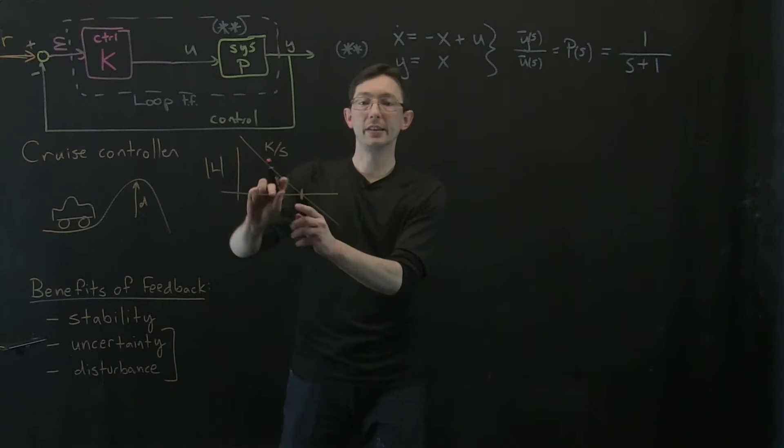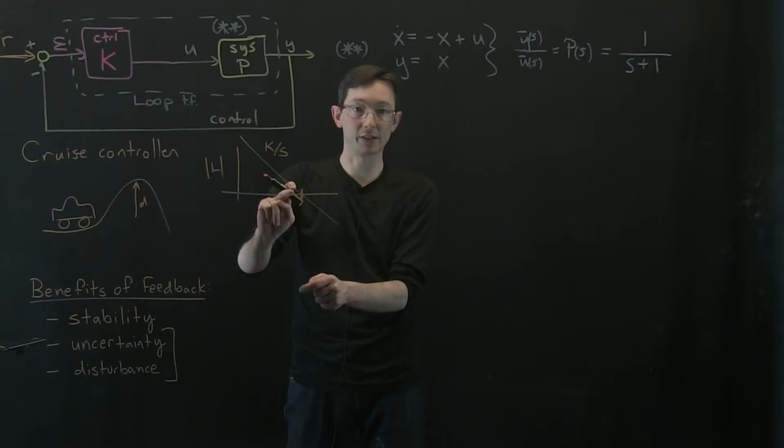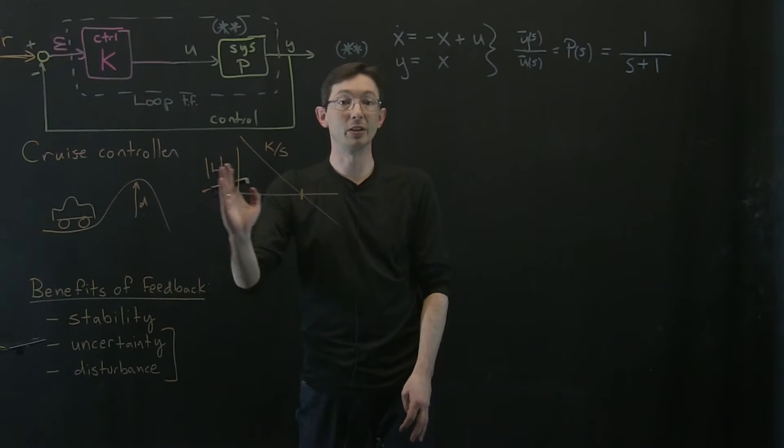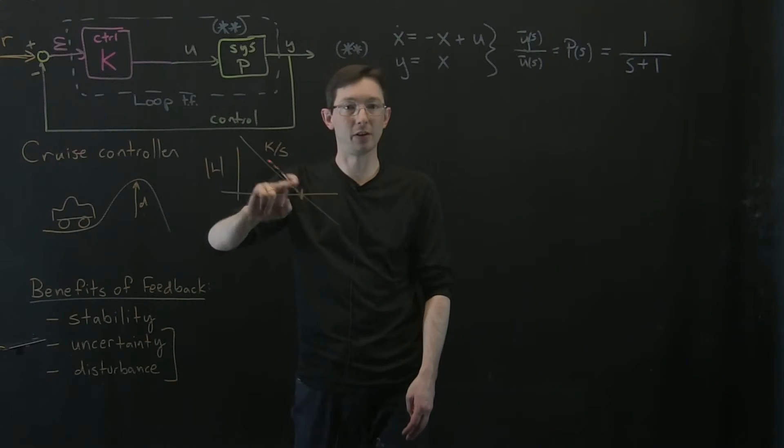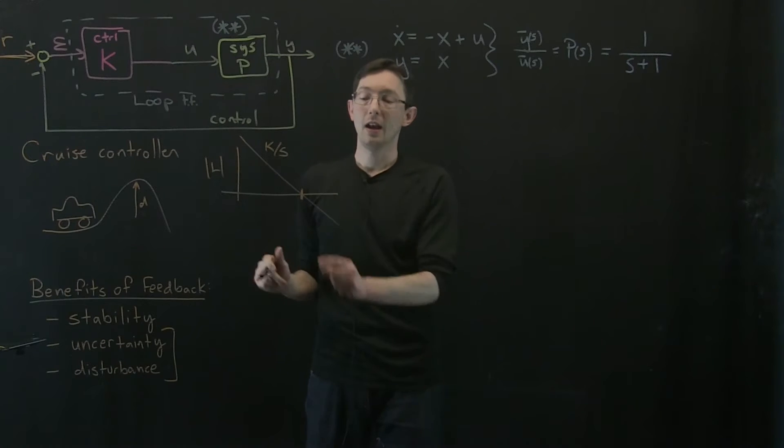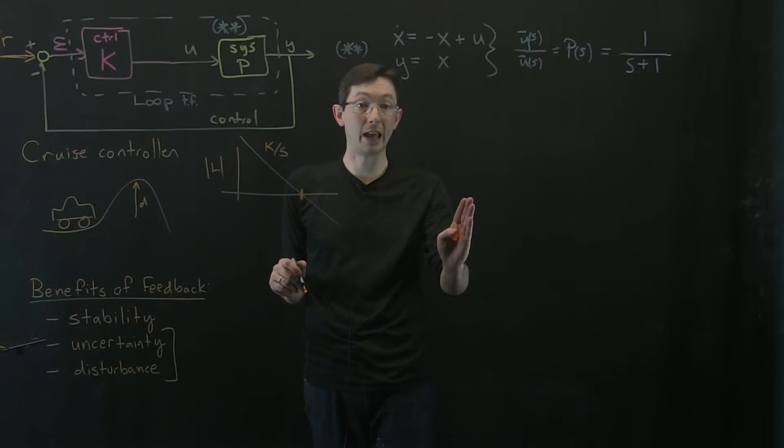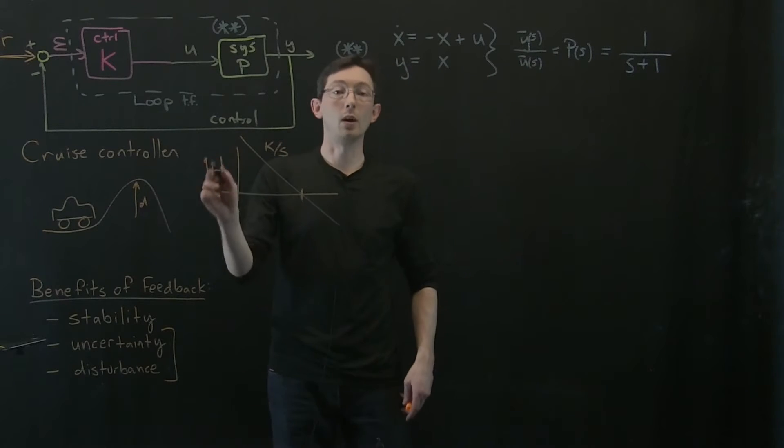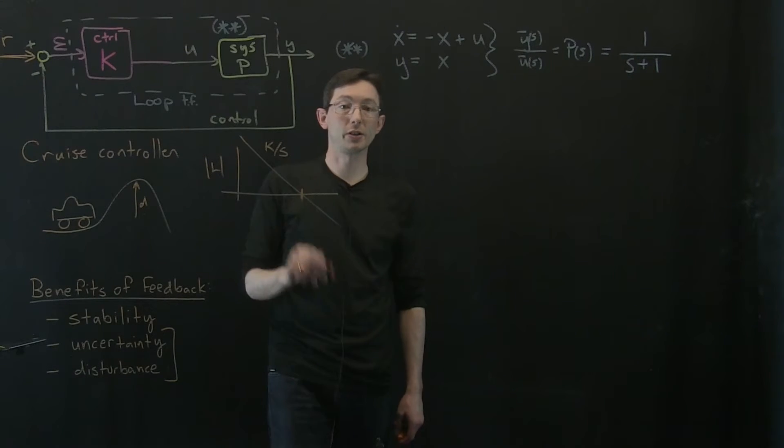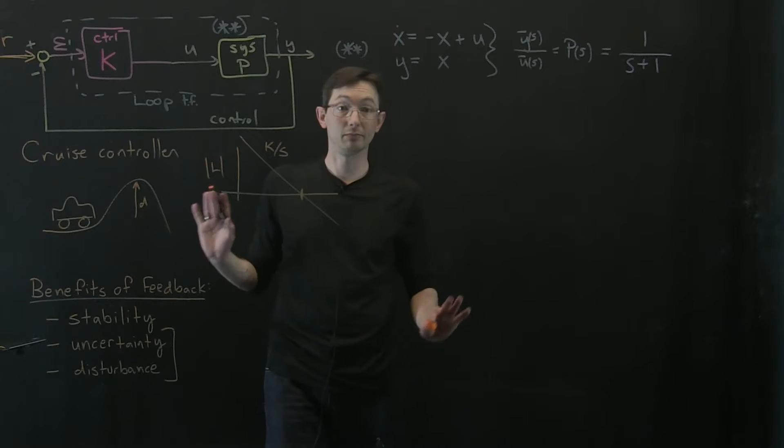So that means this is going to have effective reference tracking and disturbance rejection for frequencies below k, when this is large. And it's going to have noise attenuation properties for frequencies above k when this is small. So this is what we want - we want the loop transfer function to look like k over s.